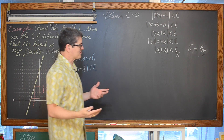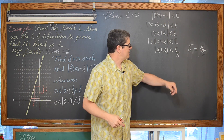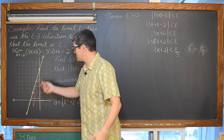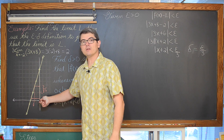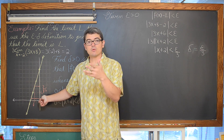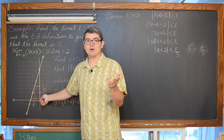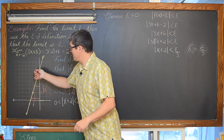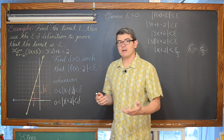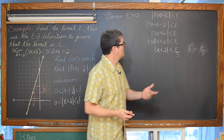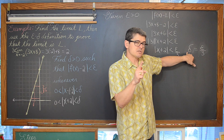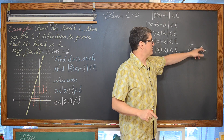That really shouldn't be a shocking revelation — that delta is going to be one third of epsilon — because the slope of this line is 3. For every one unit along the x-axis, the vertical distance changes by a multiple of 3. Delta is a horizontal movement on the x-axis from c, so delta, the horizontal distance along the number line, is one third of epsilon.